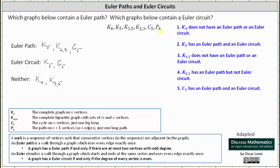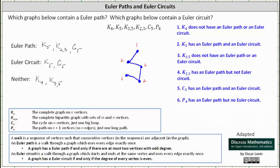The last graph is P₄. In general, Pₙ is the path on n plus one vertices and n edges — just one long path. The graph of P₄ has five vertices and four edges. Even without checking the degrees, we can recognize the graph will have an Euler path but not an Euler circuit. If we do check the degrees, we have degree one, degree two, degree two, degree two, and degree one. There are two vertices with an odd degree and three with an even degree, so at most two vertices have an odd degree. The graph has an Euler path but no Euler circuit. We list P₄ under Euler path, but not Euler circuit.